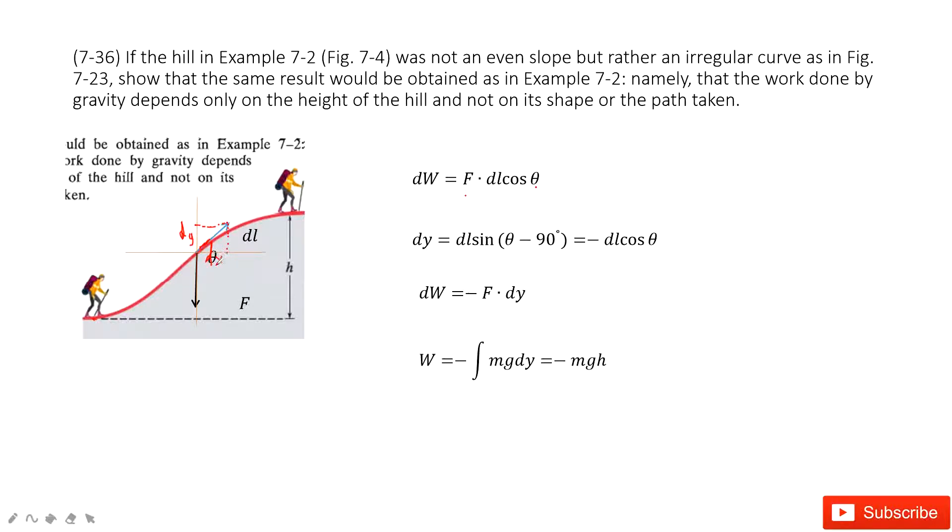And you can see the dx didn't do work, because the gravity is pointing down. This is 90 degrees. Cosine 90 is zero. So only the distance to do the work is dy. Agree?